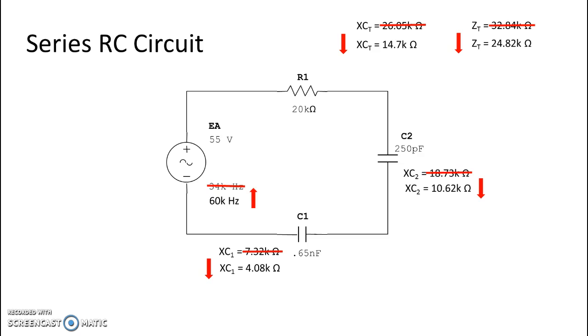Now, if impedance is going down, then current must be going up because they are inversely proportional. So it was 1.68 milliamps, and now we see that it is 2.22 milliamps, which is larger.